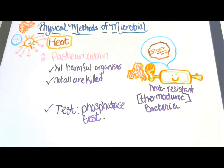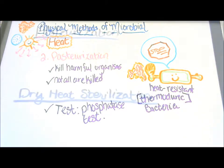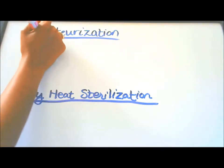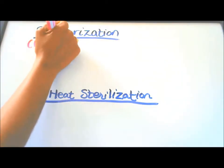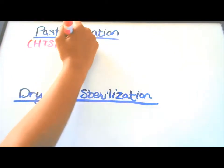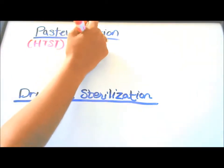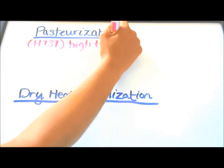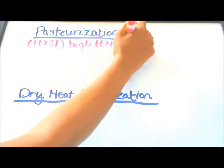Phosphatase is naturally present in milk, so if the milk is pasteurized, the enzyme would have been inactivated. The first pasteurization method is H-T-S-T — high temperature, short time.